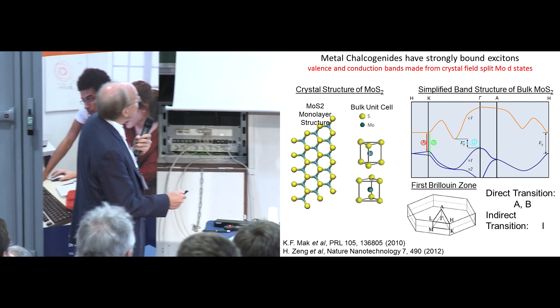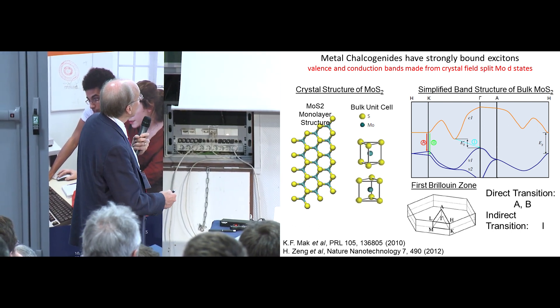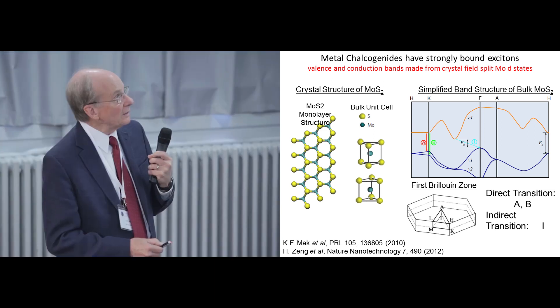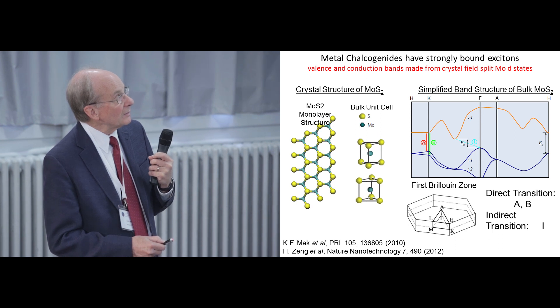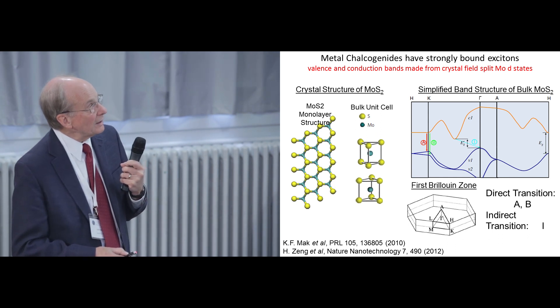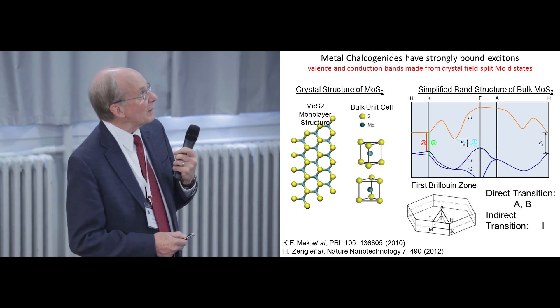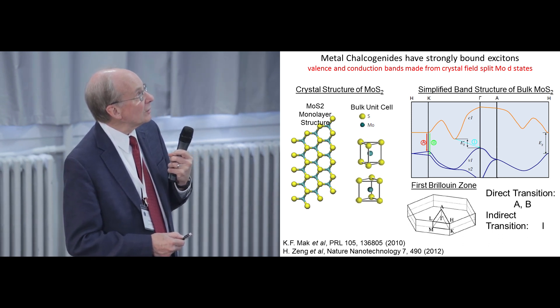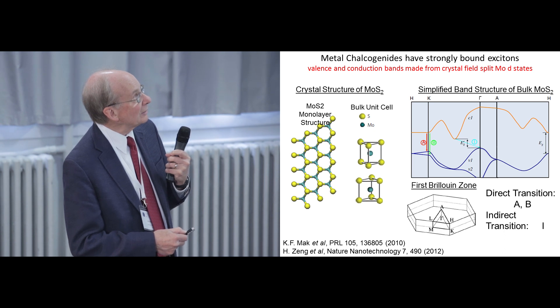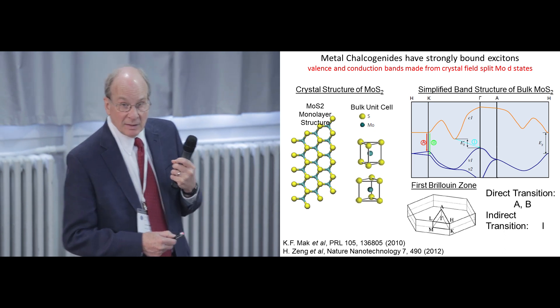There's a very interesting thing going on in the band structure of these materials. This is the bulk band structure of MoS2 for the infinite crystal. And so the infinite crystal is an indirect gap material. It has a top of the valence band right here. If you look at the bonding at the top of the valence band, there's bonding between the sulfur atom here and the sulfur atom in the next layer above it like that.